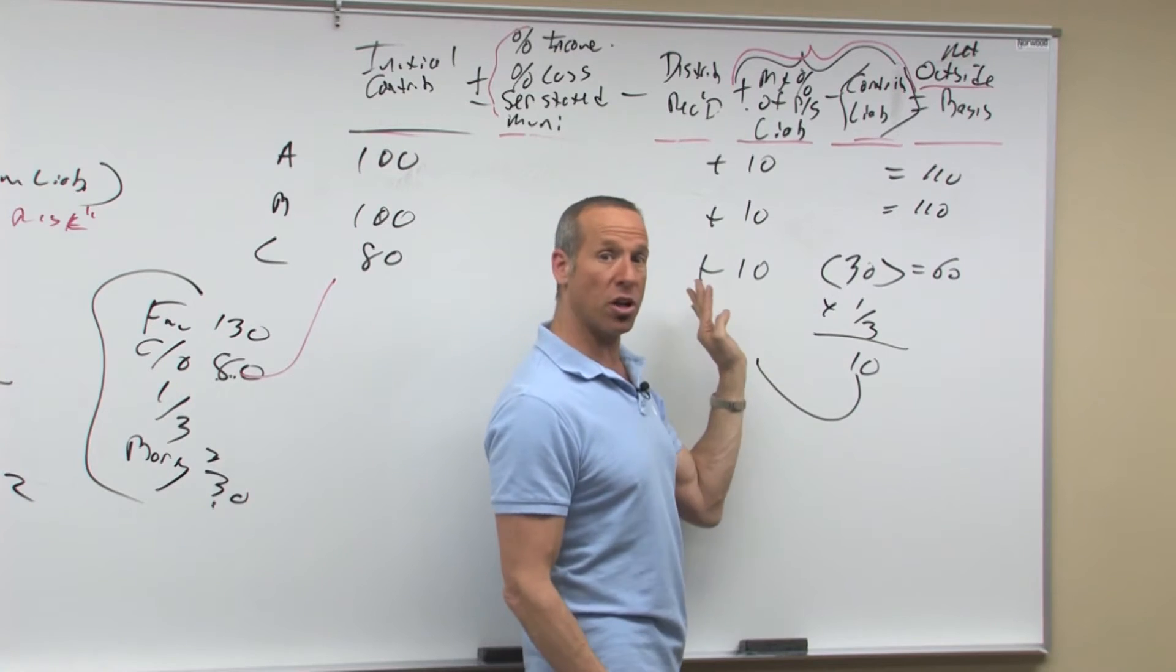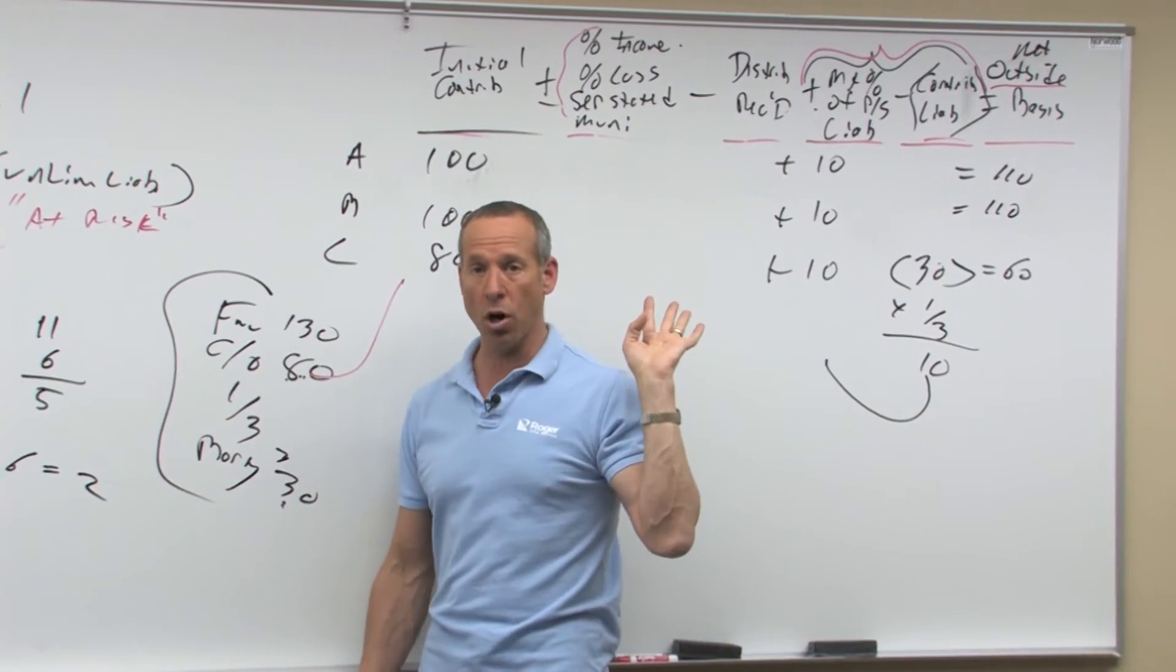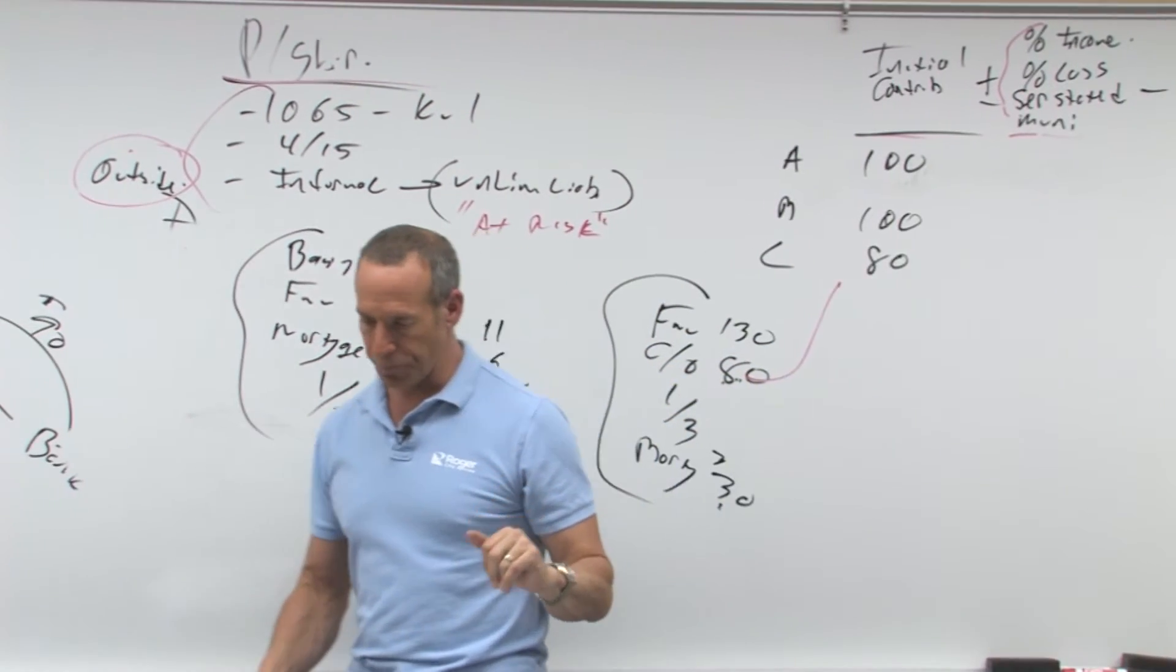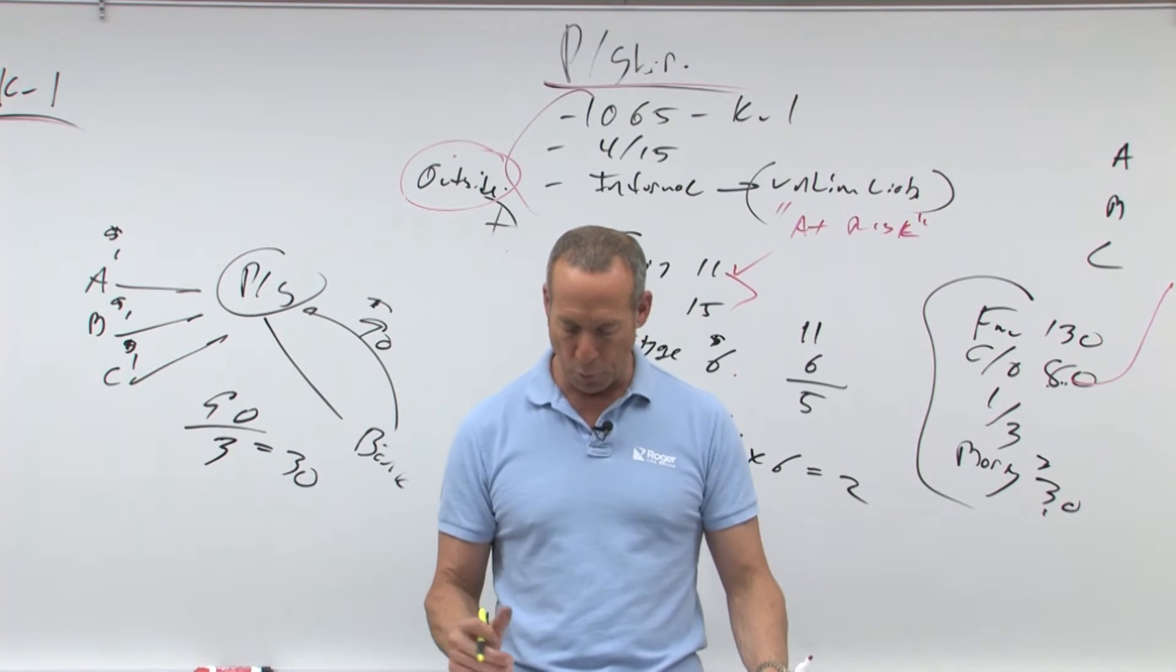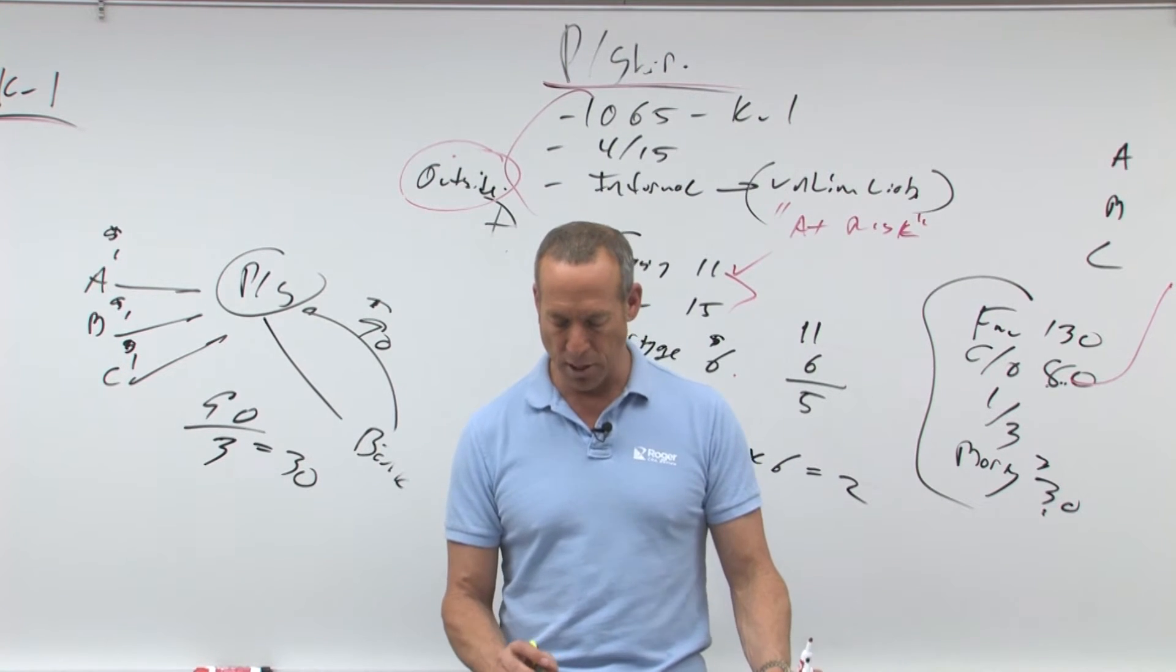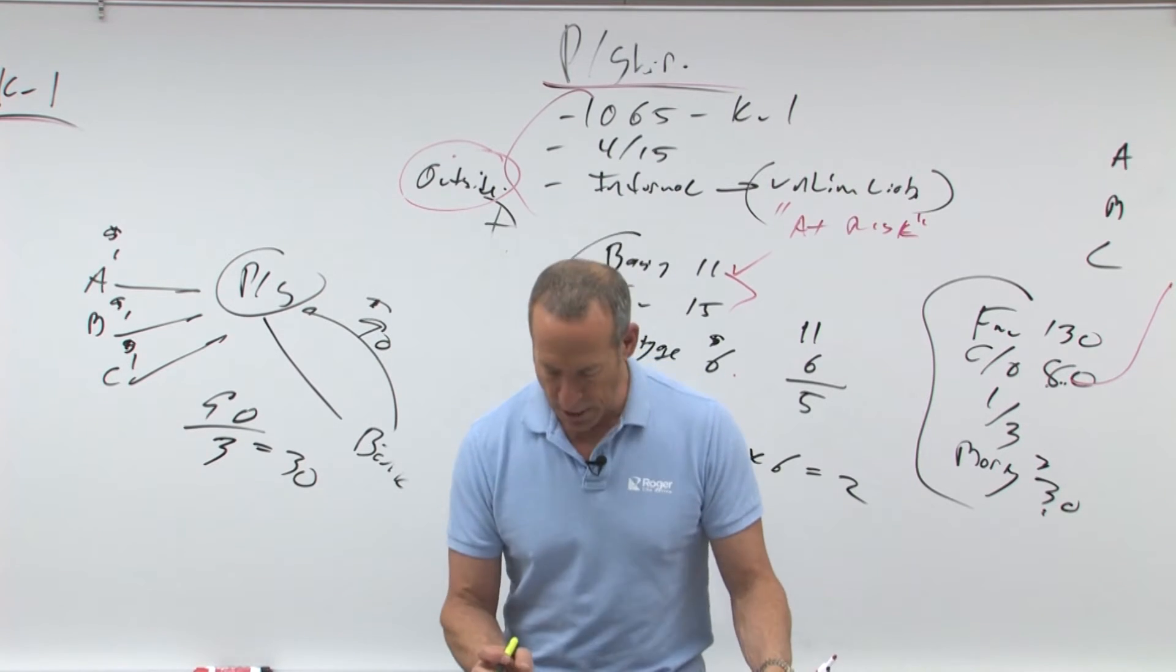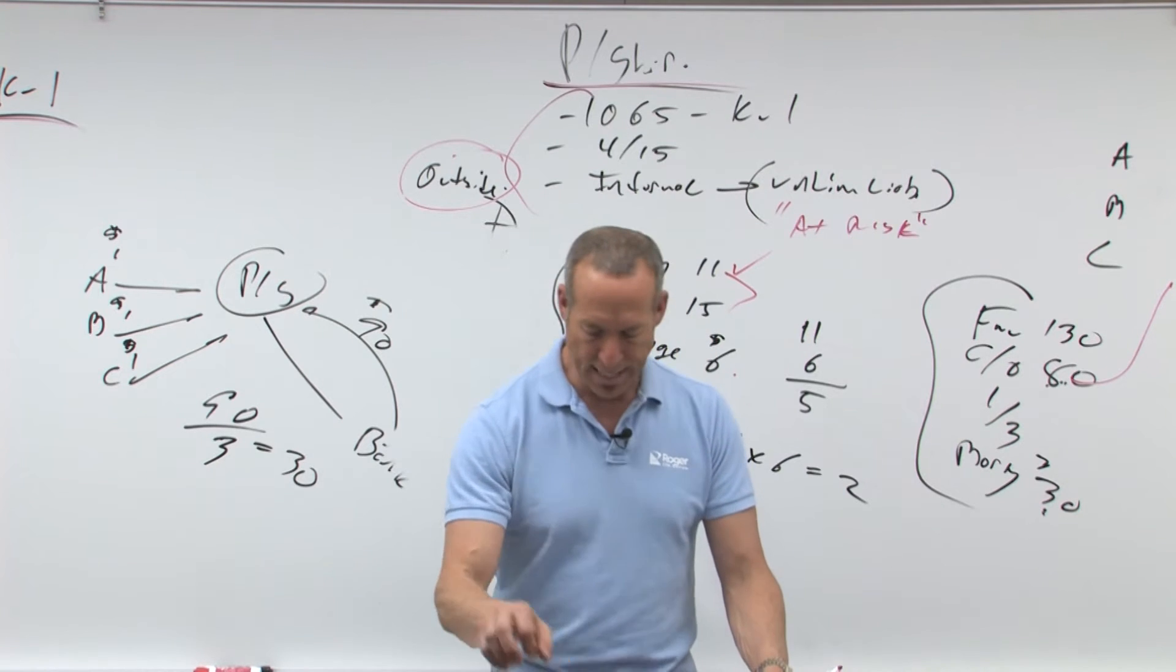the two things being plus my percent of the liability minus the contributed liability. So contributed liability, my third of it, boom, that increases my basis. That didn't exist in an S Corp. It does exist with the partnership. And then looking over services, when a partner renders services in exchange for an interest, the partner reports ordinary income equal to the fair value of the partnership interest that is being granted, and the partner's basis increased by that amount.